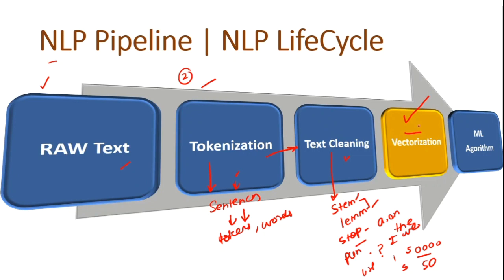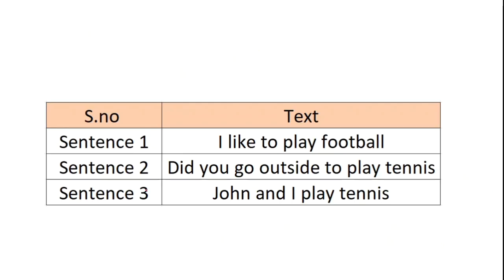Once we have cleaned the text, we perform vectorization. Vectorization is basically converting alphabets into integers — we convert characters into numericals. Once we have numbers, we apply machine learning algorithms. These ML algorithms can be used for various applications like information extraction, sentiment analysis, spam detection, or language translation.